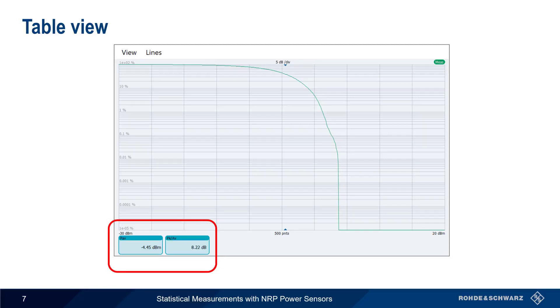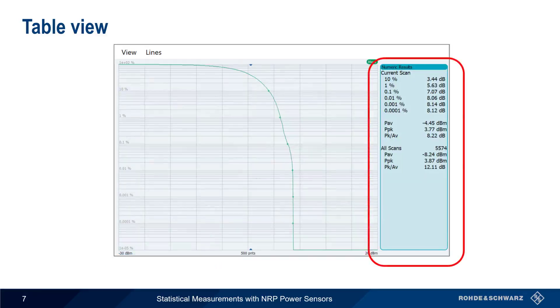When making CCDF measurements, PowerViewer also provides a table view. Simply right-click in the graph and choose Table View to display the tabular results. The percentage values show how often the signal reaches or exceeds a given level. In this example, our signal is at or above 5.63 dBm 1% of the time, and is above 8.14 dBm only .001% of the time.